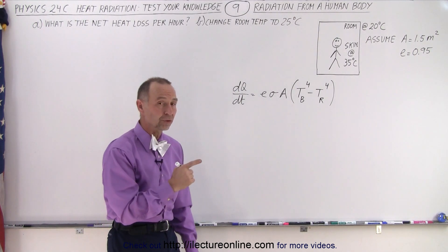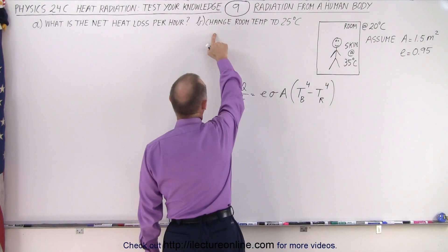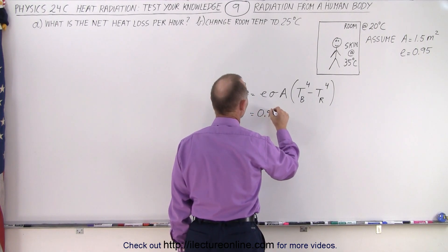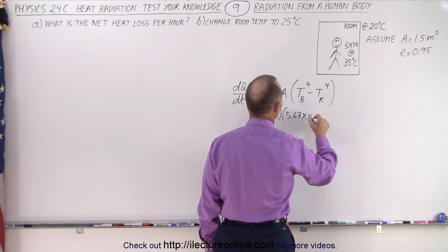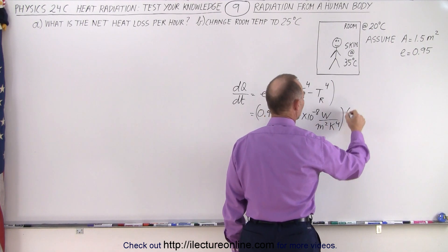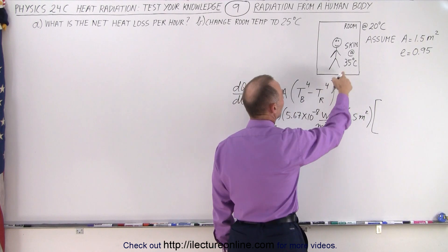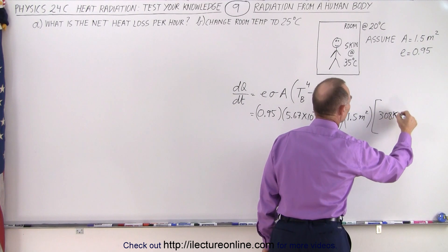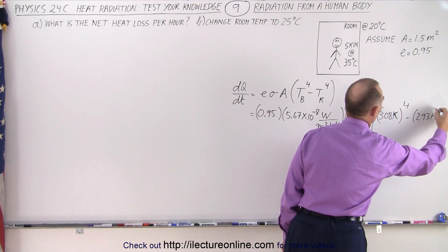We need to convert those temperatures to Kelvin instead of Celsius, so let's plug in the numbers. This is equal to 0.95 times sigma — that's 5.67 times 10 to the minus 8, with units of watts per square meter Kelvin to the fourth power — times the surface area of 1.5 square meters. The body temperature: 35 plus 273 is 308 Kelvin, to the fourth power, minus 20 plus 273 which is 293 Kelvin, to the fourth power.